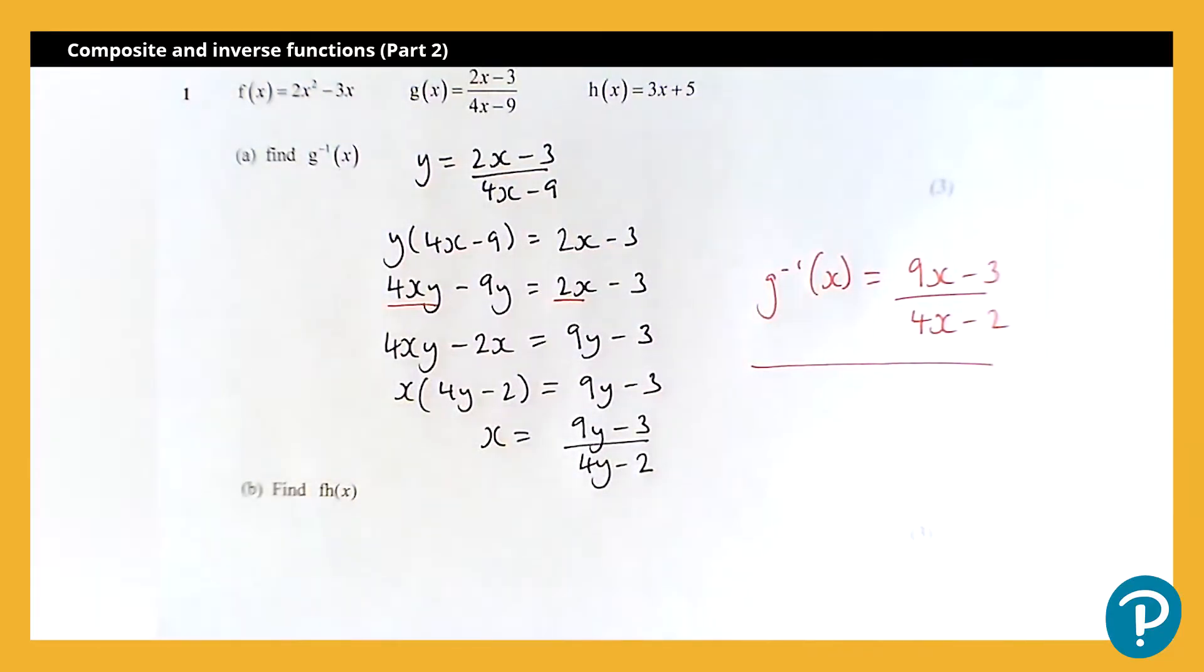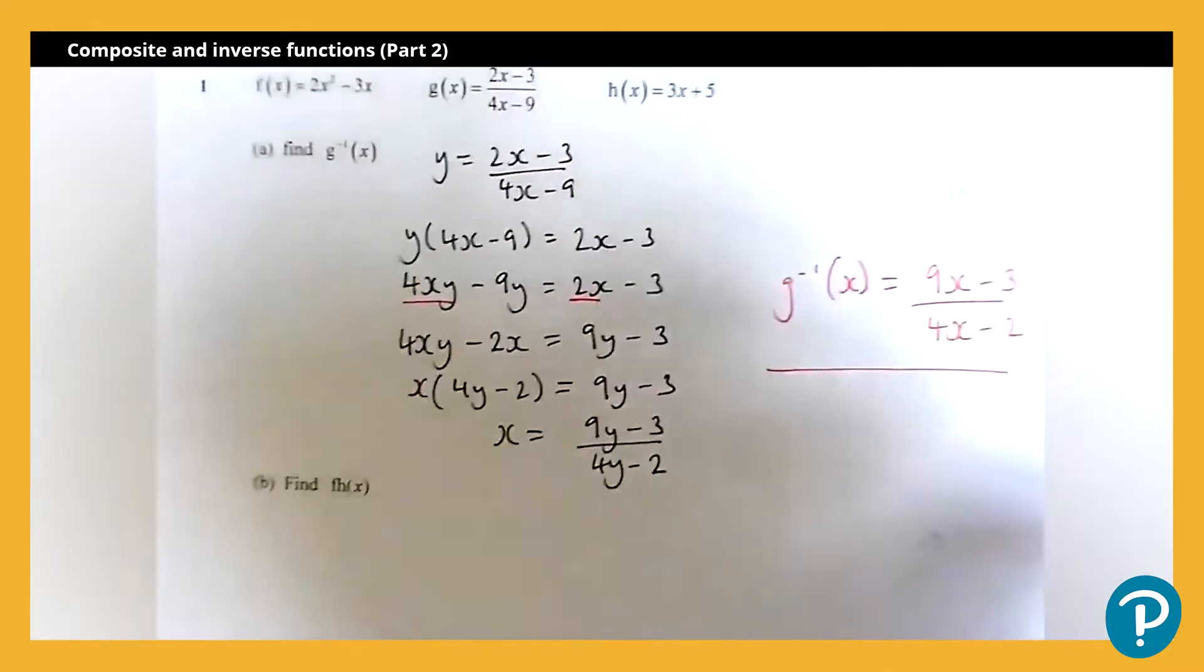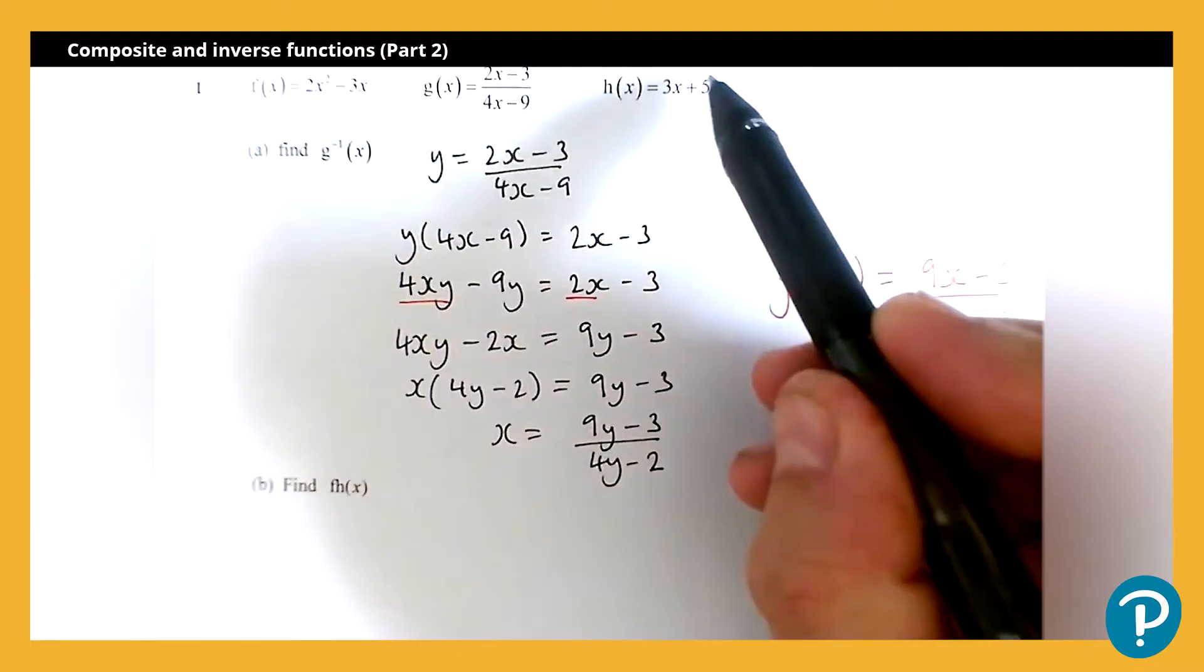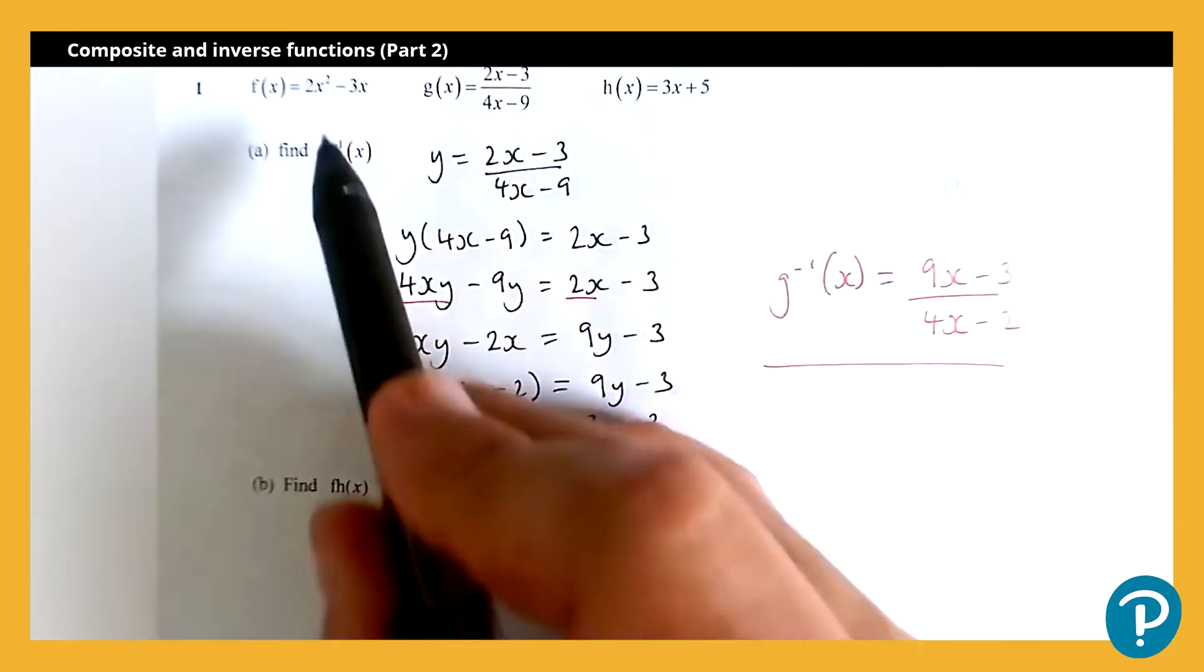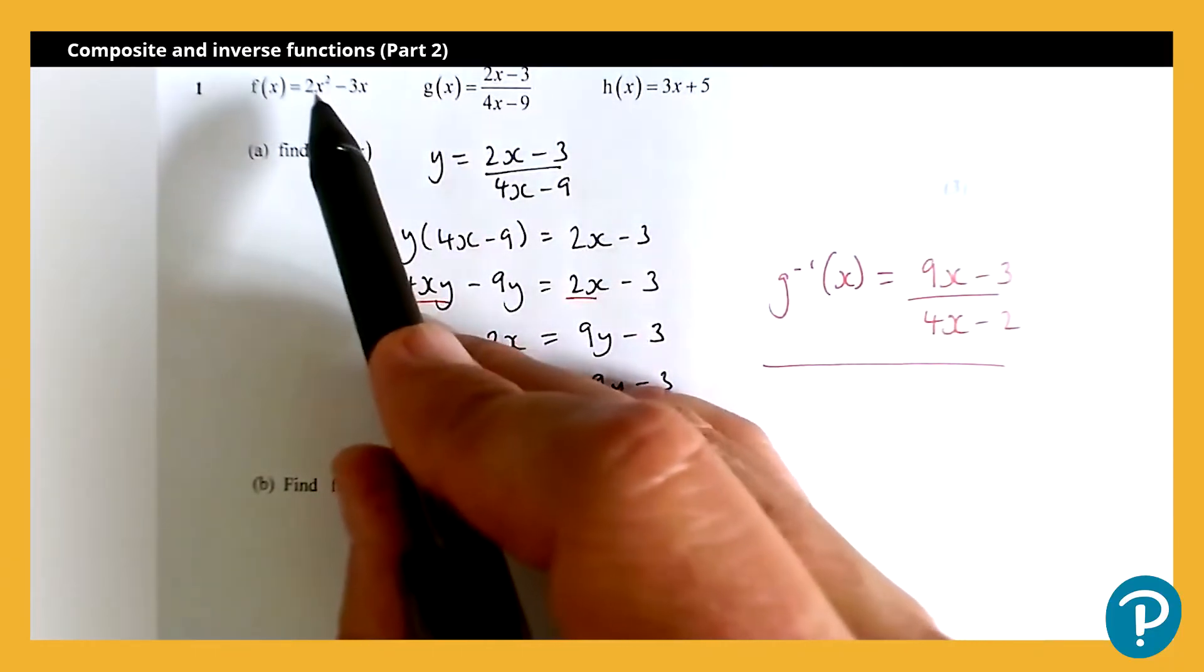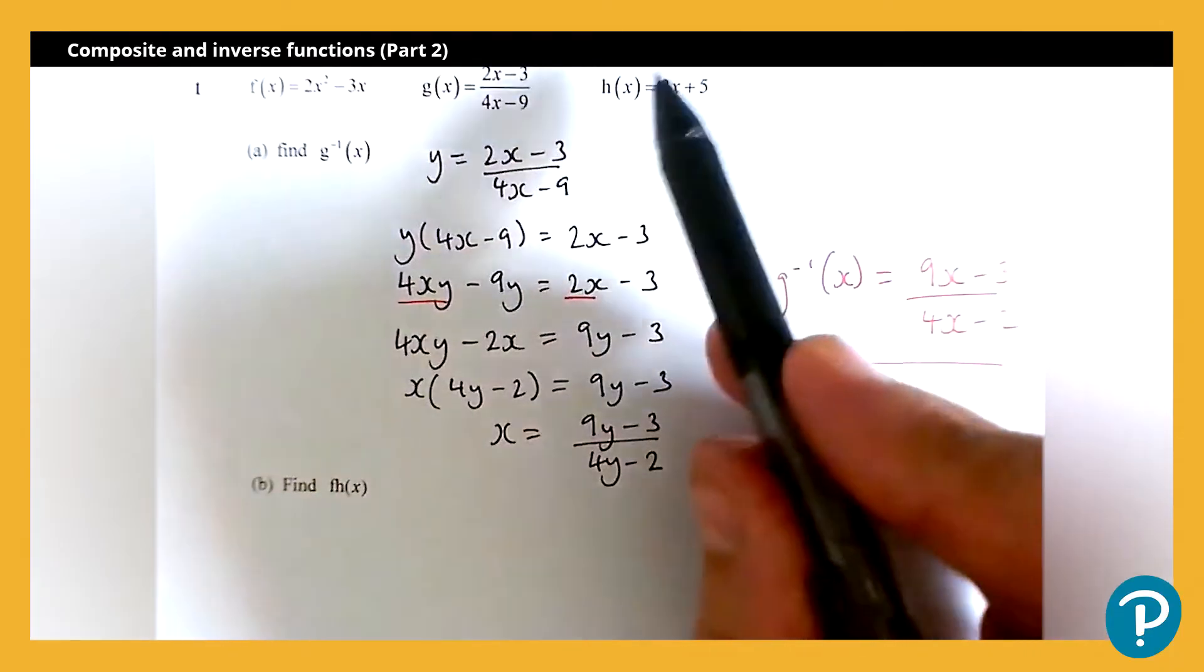However, we're looking for the composite function here, so we need to do f h of x. So effectively, what we're going to do is we are going to substitute h of x into f of x. So wherever we have x in f of x, we're going to have the expression from h of x.